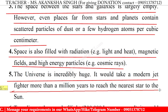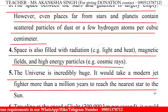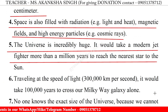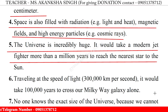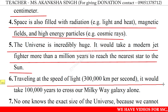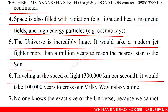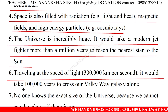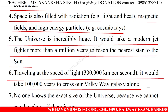Number 5: The universe is incredibly huge. It would take a modern jet fighter more than a million years to reach the nearest star to the sun. Number 6: Travelling at the speed of light — 3 lakh kilometers per second — it would take 1 lakh years to cross our Milky Way galaxy alone.